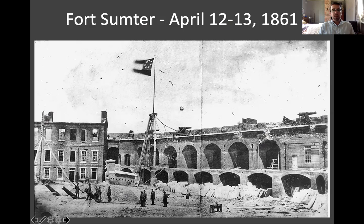On April 15th, Lincoln called for 75,000 volunteers to suppress the rebellion. Right then, four states in the Upper South seceded: Arkansas, Tennessee, North Carolina, and Virginia — which became the capital of the Confederacy. Eleven slave states had now joined the Confederacy; four slave states remained in the Union. The war began, and most people on both sides thought it was going to be a brief, short war.